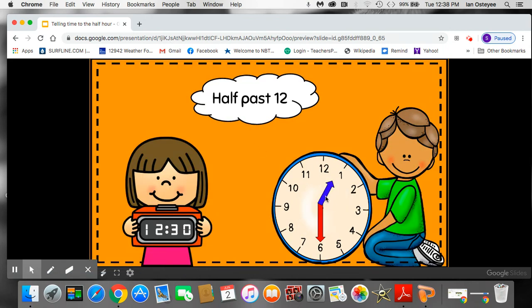Half past 12. Well, the hour hand is halfway past the 12. It's not on the 1 yet. And the minute hand fell down, got dirty. We know we say 30. So let's check where our hour hand is. It's not on the 1 yet. It's halfway past the 12. 12, 30.